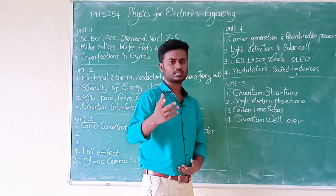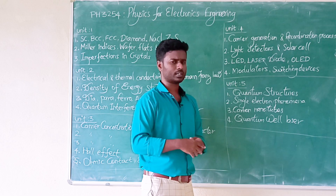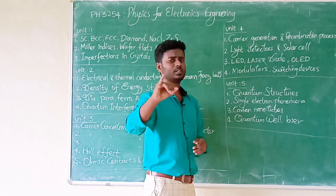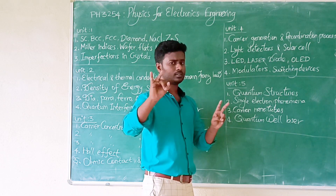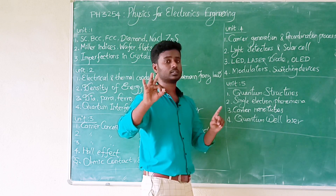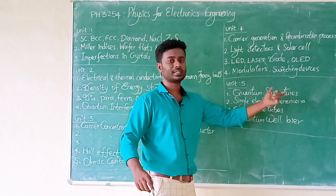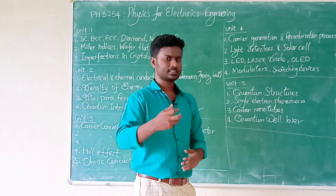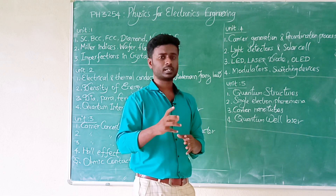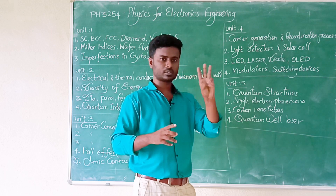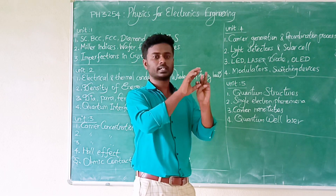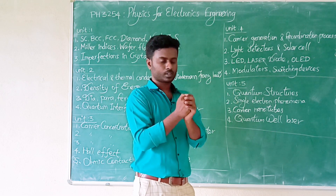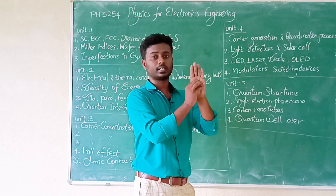Unit 5 is Quantum Structures. Types: Quantum well (two-dimensional confinement), Quantum wire (one-dimensional), and Quantum dot (zero-dimensional). The concept of quantization: in one dimension or two dimensions, energy is quantized correctly.